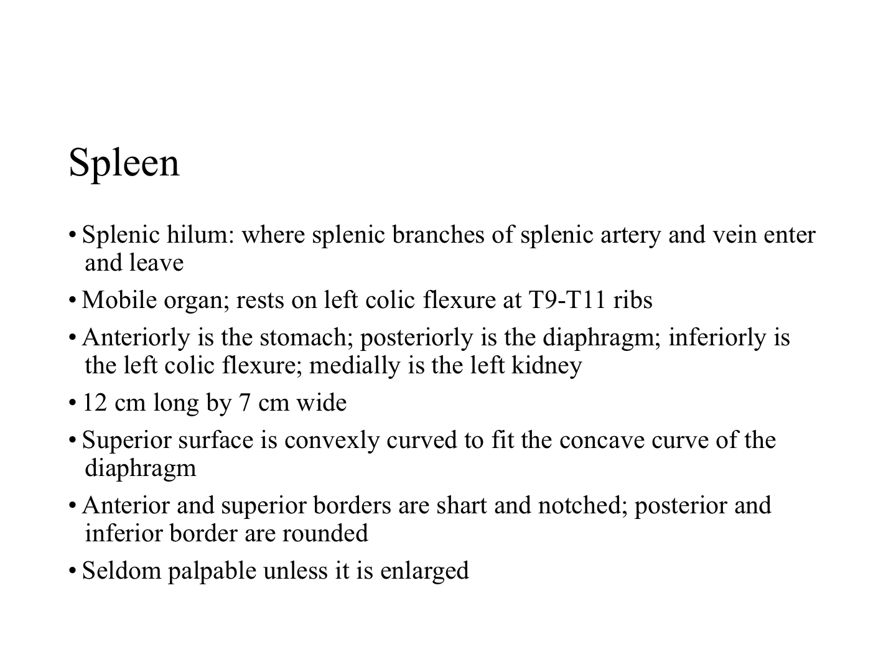The costodiaphragmatic recess is that cleft-like extension of the pleural cavity between the diaphragm and the lower thoracic cage. The relations of the spleen are: anteriorly the stomach; posteriorly the left part of the diaphragm, which separates it from the pleura and lungs; inferiorly the left colic flexure; and medially the left kidney. The close relationship of the spleen to the ribs protects it, because a rib fracture could rupture the spleen, causing significant hemorrhaging and blood loss.